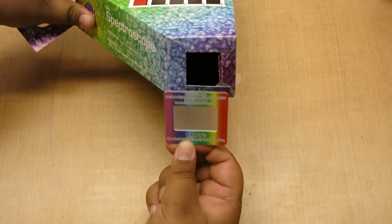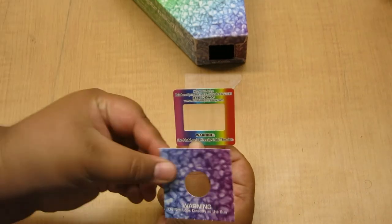Now, place the diffraction grating and eyepiece so that the labels match the label on the spectroscope, and tape them in place.